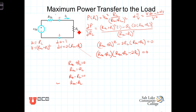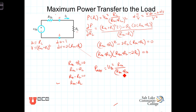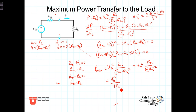So how much power can we transfer? When R_L = R_Thevenin, substituting into our power expression and calling it P_max: P_max = V_Thevenin² × R_Thevenin / (R_Thevenin + R_Thevenin)² = V_Thevenin² × R_Thevenin / (2·R_Thevenin)². The R_Thevenin terms cancel and the 2 gets squared, leaving us with P_max = V_Thevenin² / (4·R_Thevenin).